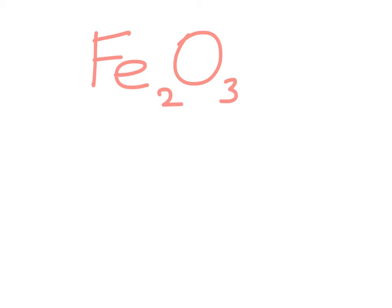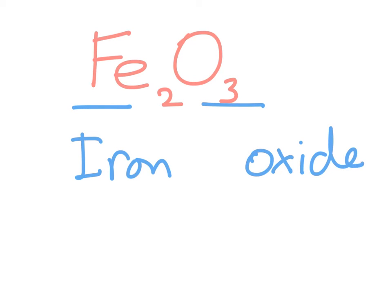Take Fe2O3, where Fe is iron, a transition element. You name iron as iron, and then oxygen becomes oxide. But because iron is a transition element, you must mention its oxidation state. The oxidation state of oxygen is 2, so iron must have an oxidation state of 3 to balance. We say iron(III) oxide.